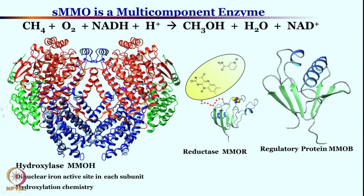This is a gigantic protein with many subunits — alpha, beta, and gamma subunits. In each of the alpha subunits there is a di-iron center which is responsible for converting methane into methanol — that means the hydroxylation chemistry is happening there.